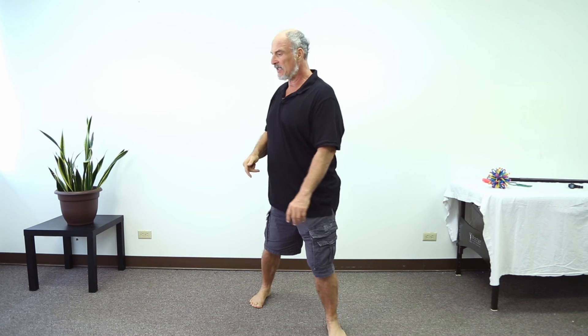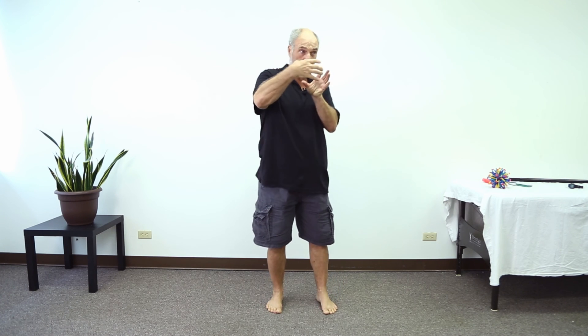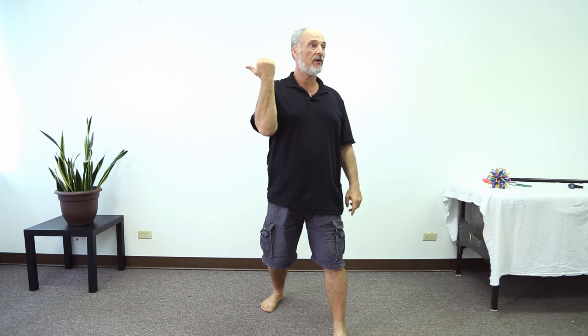And then when you turn from your lower dantian, it doesn't just mean side to side. It also means that if you wanted to go back, you'd turn this way, or you wanted to go forward, you'd go this way. So you think of the dantian as a ball, whichever way that ball turns, it tells everything else. Like I'm here and I want to go over there, I turn my lower dantian this way and that's how I get there.